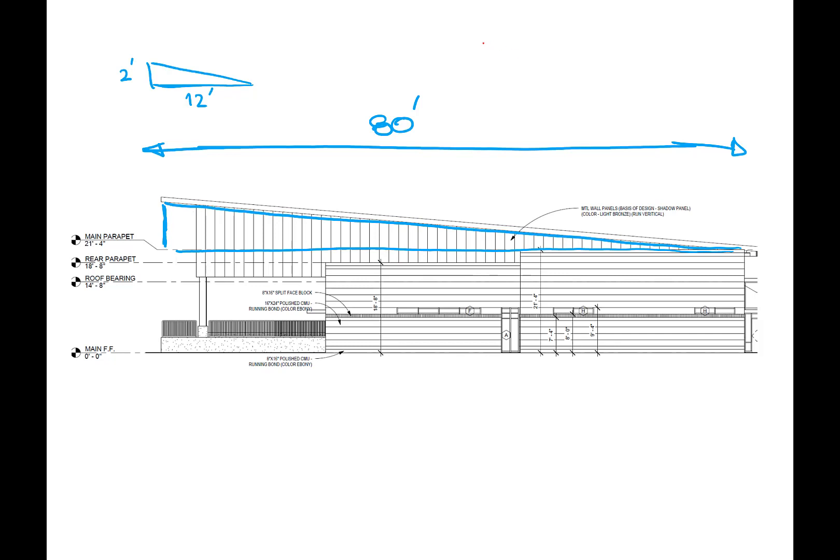And then you can simply say 2 to 12 is going to be equal to x over 80. And whatever that number comes out to be is going to be your x. Well, in this case, it's going to be 160 over 12, and that's going to be 13.33. So then I realized that this line is going to be 13.33 feet.